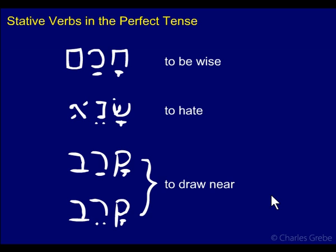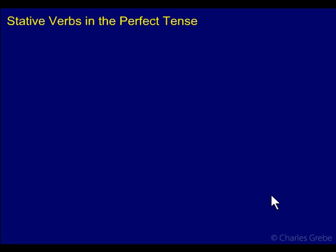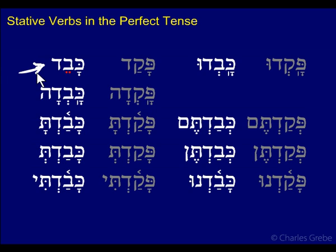We have three different types of theme vowels: the PATACH, the TZERE, and the HOLUM. The statives tend to use TZERE and HOLUM. Let's look at the full paradigms for the perfect statives, and first we'll look at the TZERE. The TZERE pattern is really easy because it's only in the 3MS form where you see the TZERE showing up.